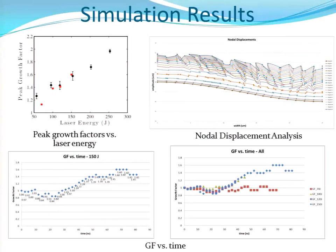This shows some of the simulation results we can get — peak growth factors as a function of laser energy, which is really what we're interested in. We use nodal displacements and standard deviations to get some sort of value from the messy simulations. We can get growth factors as a function of time, which we can't do at Omega — so it's pretty interesting to see how it evolves. Something very interesting is that the max growth factor isn't always at the peak of the ripple — it's actually on the sides of the ripple — and that's something we were able to understand through simulations.